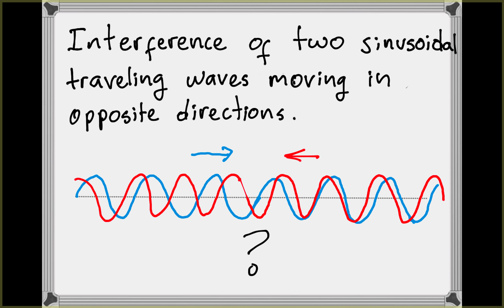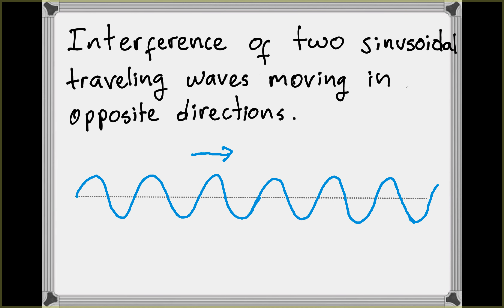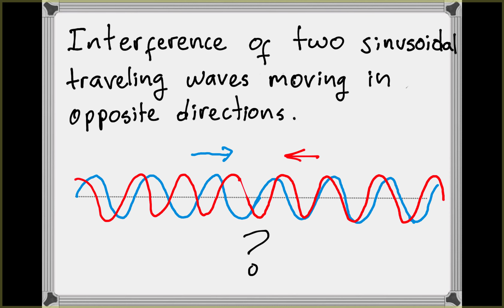Let's talk about the interference of two sinusoidal traveling waves that are moving in opposite directions. We have one sinusoidal traveling wave going to the right and one going to the left. If they're moving in the same medium at the same time, one to the right and one to the left, what's going to happen? How is the medium going to behave in this situation?